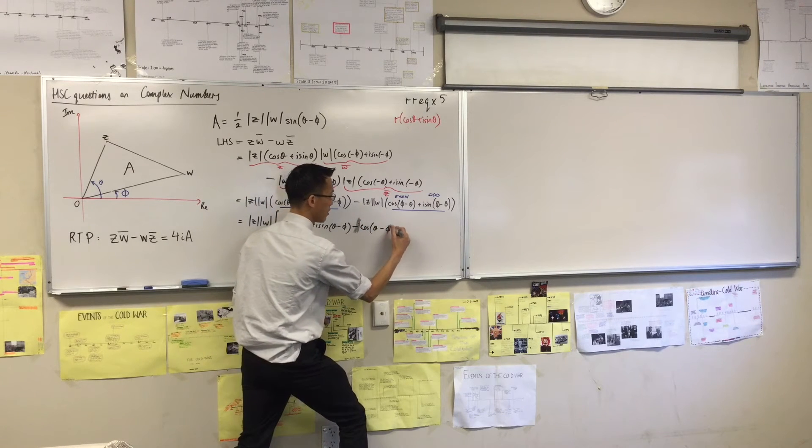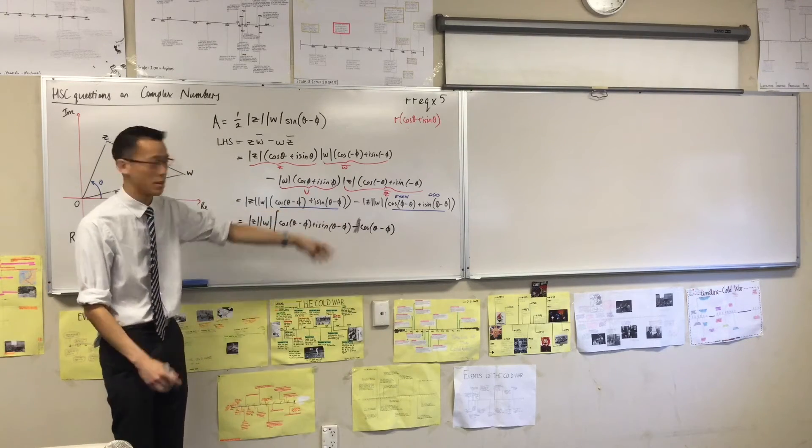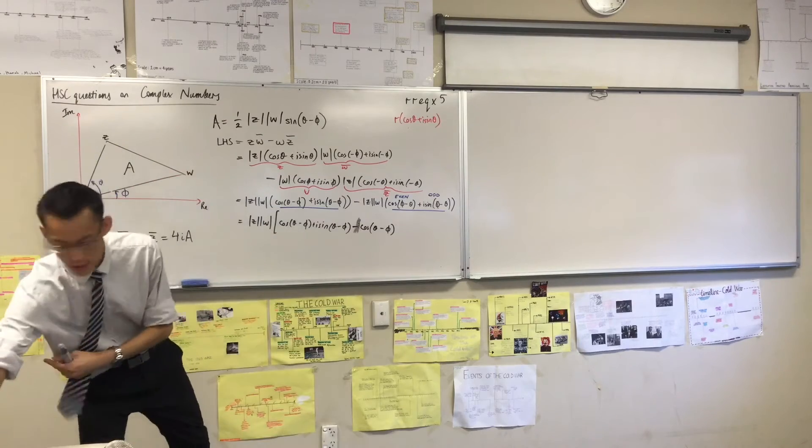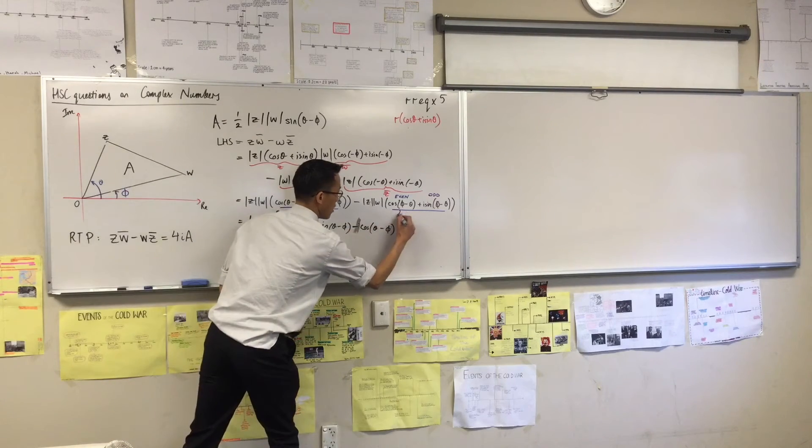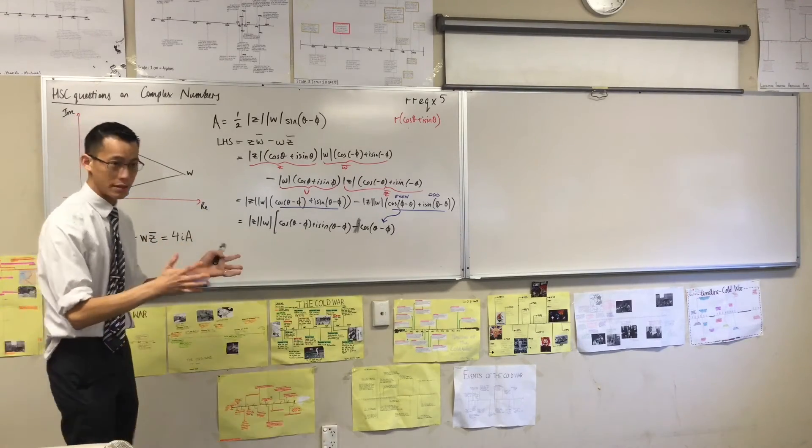I can just replace it with that because cos is an even function. I'm going to say that in a second once I finish writing my line. So you can see what I've done. I can just switch those angles around because cos is even.